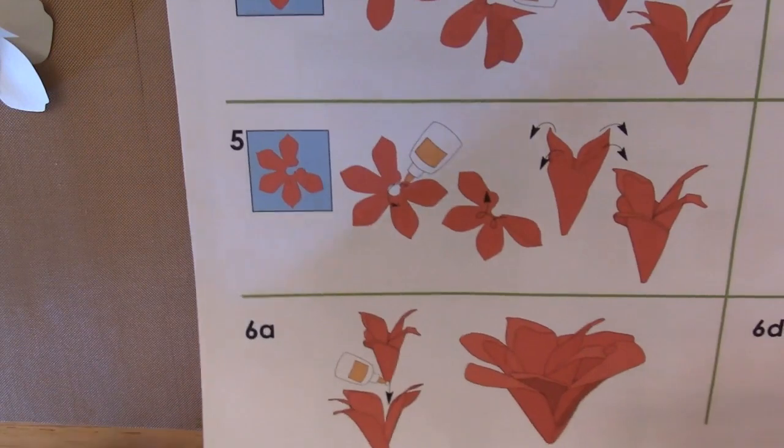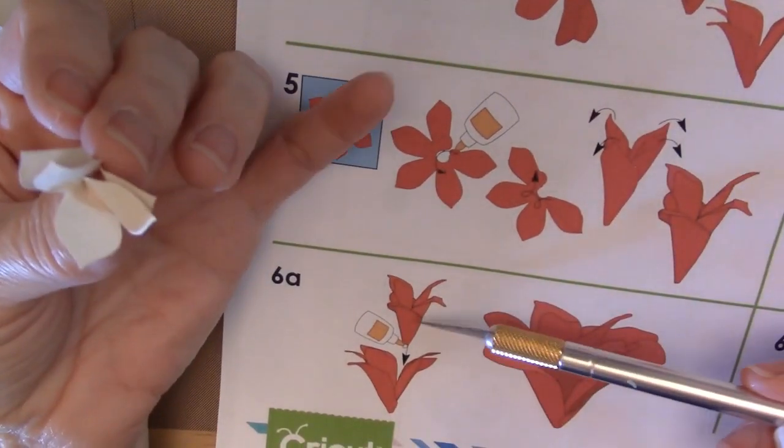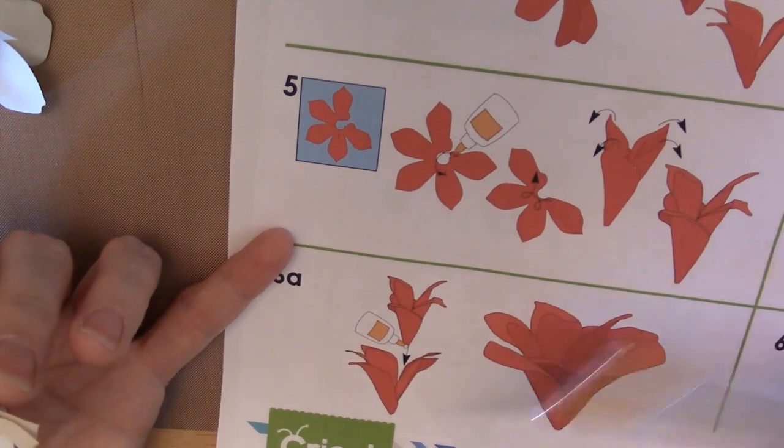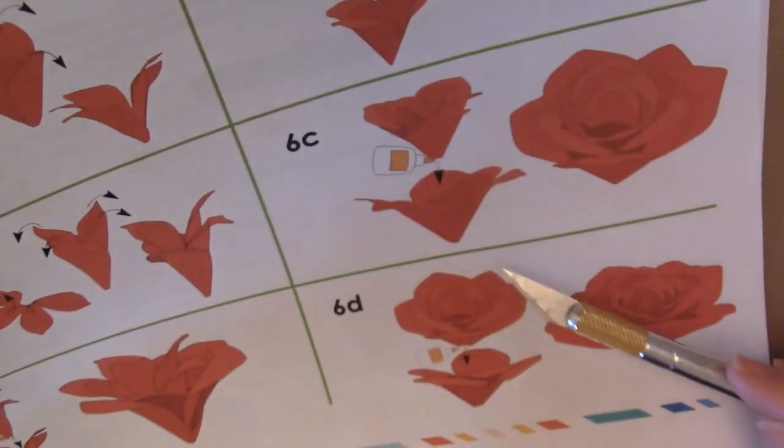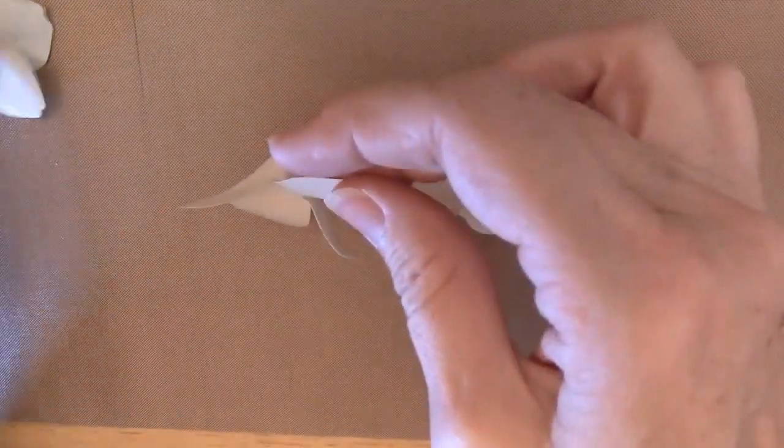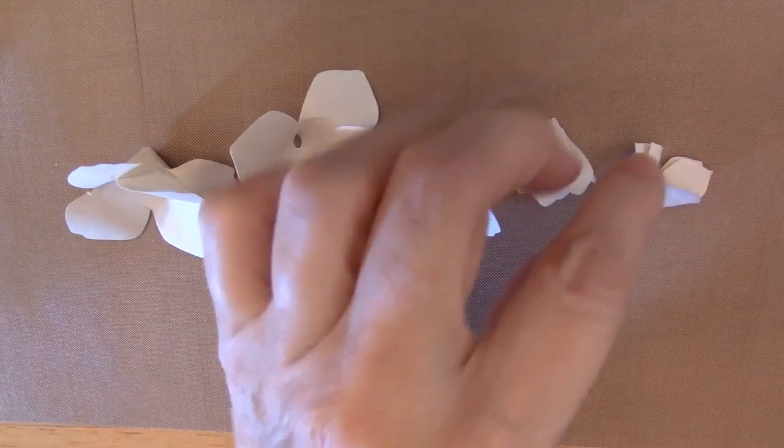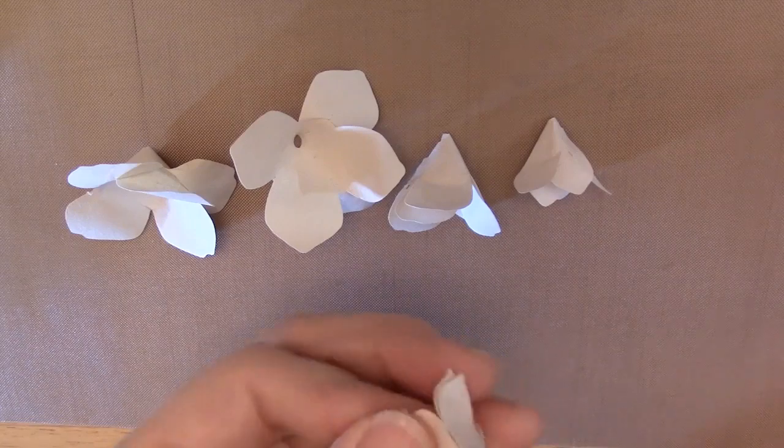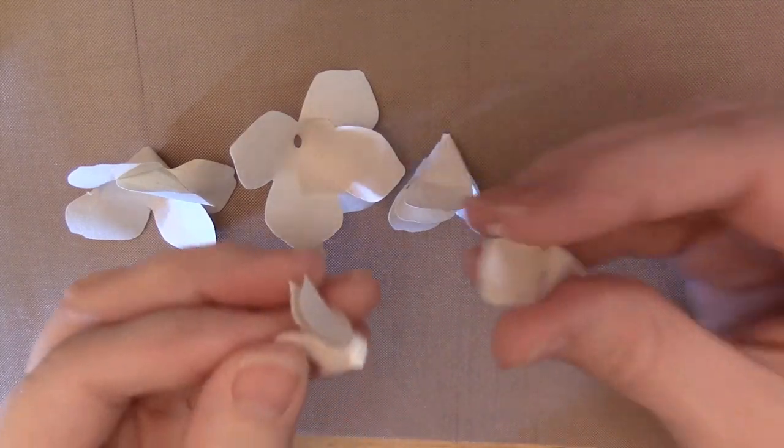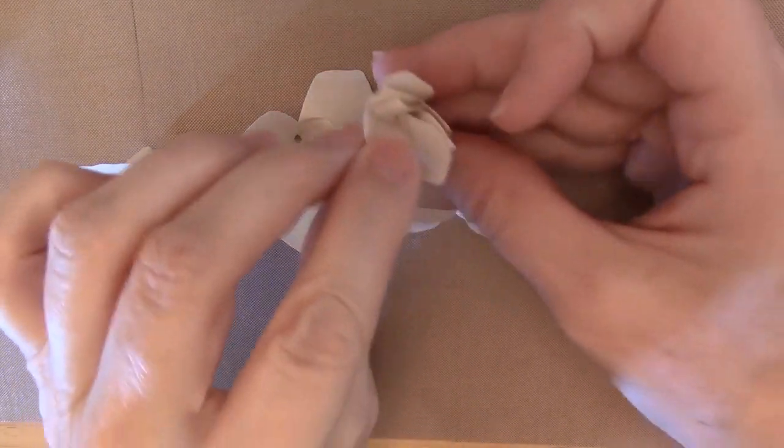You start with this smallest one and put some glue at the bottom and glue it into the next biggest one. So I find it easier, you're going to go from the smallest gluing inside each of the next bigger ones till you're done. So I find it easiest to line them up by size so you can tell which goes when. Okay, so I'm going to put some glue on the bottom of this smallest one. I just put it all around and then put it inside.